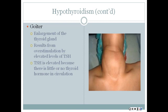Some forms of hypothyroidism can lead to the development of a goiter — this is a picture of a fairly large goiter. A goiter is an enlargement of the thyroid gland and it can result from overstimulation by elevated levels of thyroid stimulating hormone. TSH is elevated because there is little or no thyroid hormone in circulation.